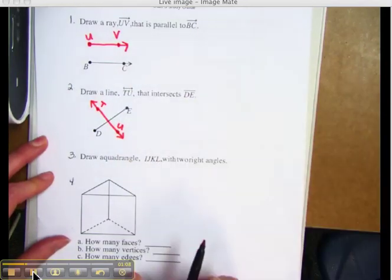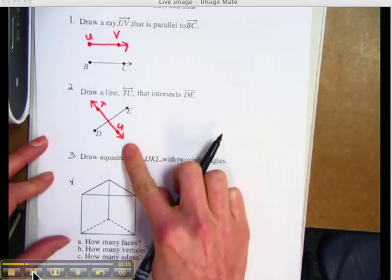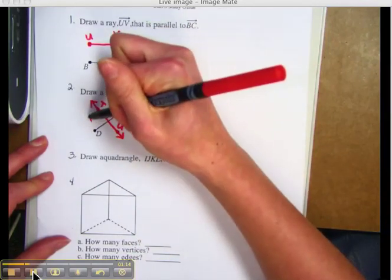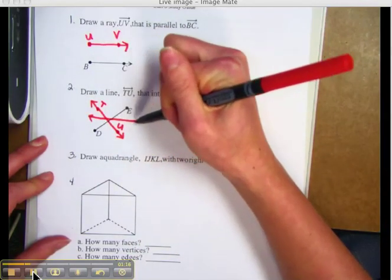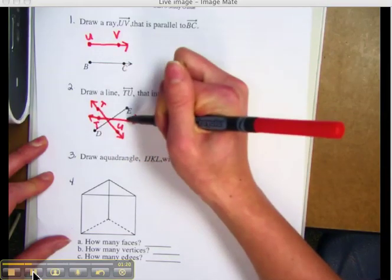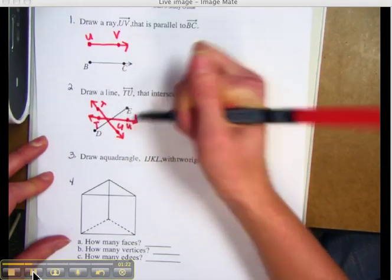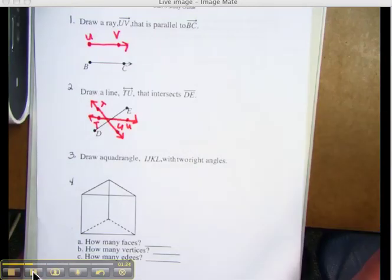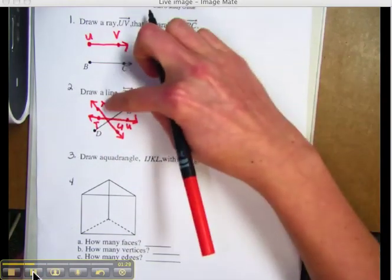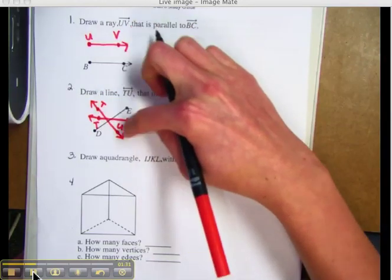Your line doesn't have to intersect at the exact same place that my line did. You could also draw a line that intersects this way. As long as you label TU. Now your line could have intersections at different points. As long as it intersects and you've labeled your line TU with two arrows, you've done it correctly.